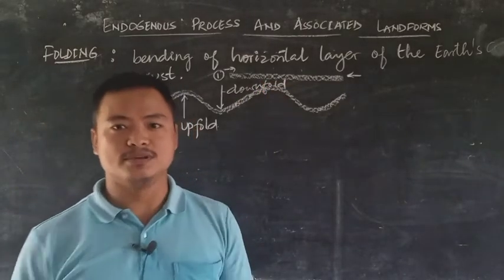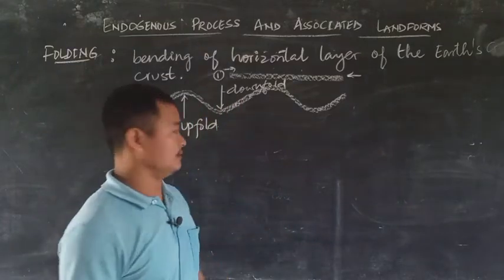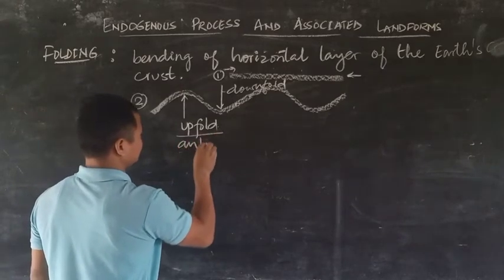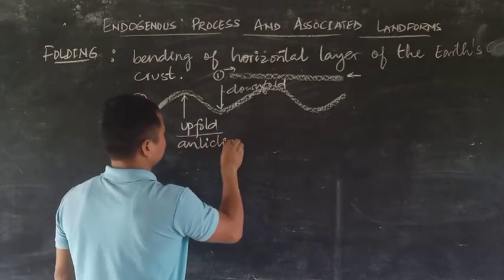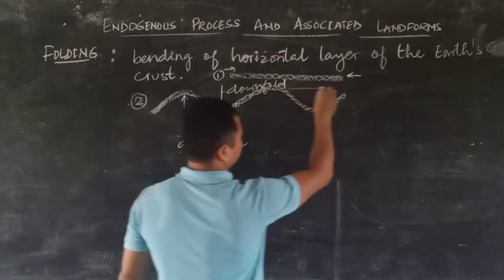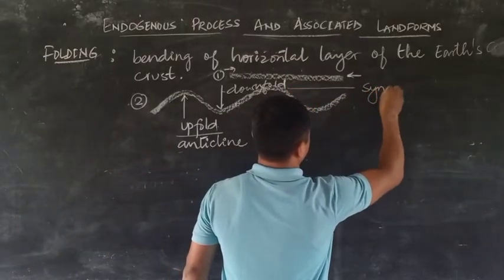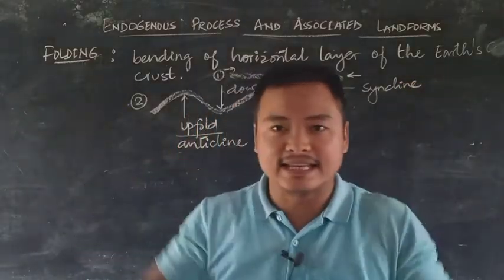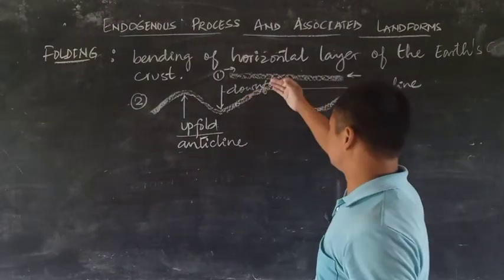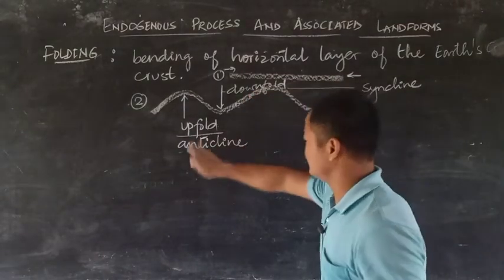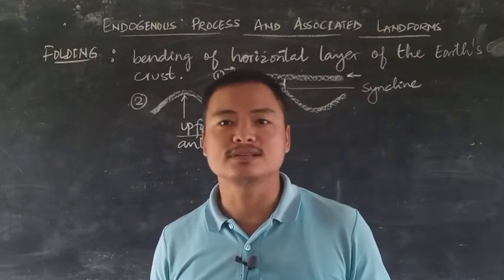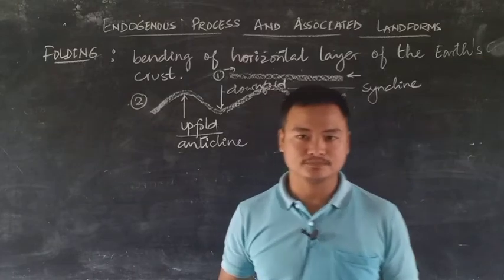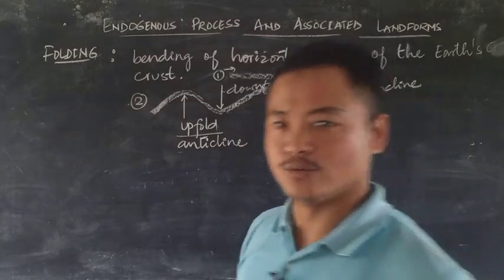In common terms we call them up fold and down fold. Technically, the up fold is known as anticline, and the down fold is known as syncline — it is sinking, hence syncline. Anticline is just the opposite. This is the fold, and the process involved is known as folding. Now let's discuss the various types of folds.